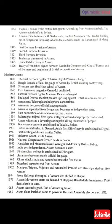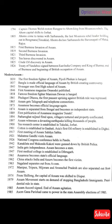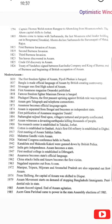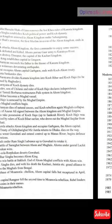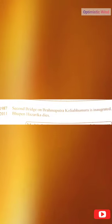In 1974, the capital of Assam was shifted from Shillong to Dispur. In 1979, the Assam Movement starts on the demand of stopping Bangladeshi immigrants — first Presidential Rule in the state. In 1985, the Assam Accord is signed, ending the Assam Agitation. In 1985, the Asom Gana Parishad comes to power in the state assembly election. In 1987, the second bridge over the Brahmaputra — Kaliabhomora — is inaugurated. In 2011, Dr. Bhupen Hazarika dies.